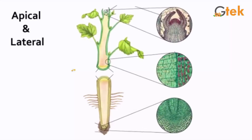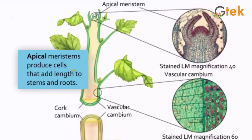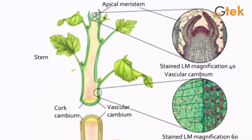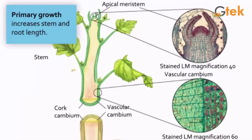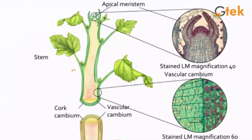Here you can see the apical and lateral meristems. Apical meristem produces cells that add length to roots and stems. Primary growth increases stem and root length, while secondary growth increases root width.